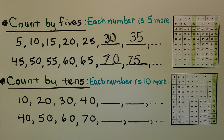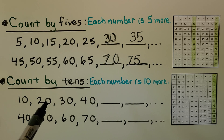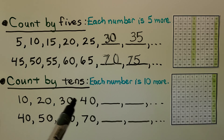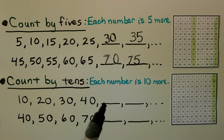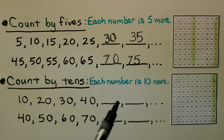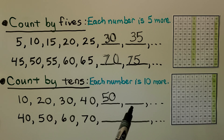We can count by tens — each number is 10 more. On our 100 chart we can see the pattern: 10, 20, 30, 40. Do you know what goes there? It would be 50. So what number would go here? It would be 60.